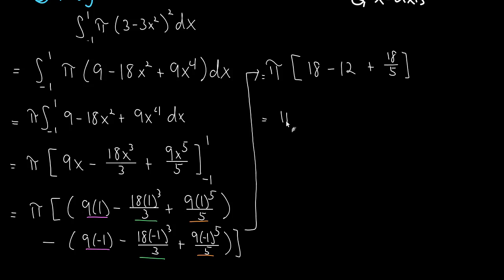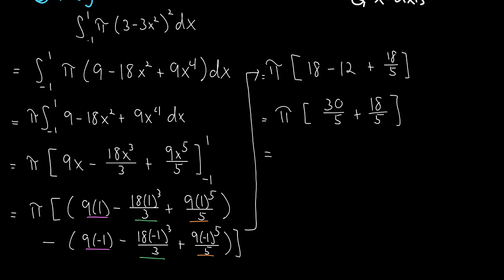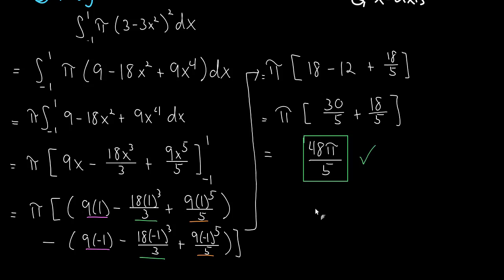We're at the finish line. This gives us 18 minus 12, which is 6. Putting that over 5 gives 30 over 5, plus 18 over 5, which equals 48 over 5. So our final answer is 48 pi over 5. It took a while to get there, but we got through all the steps. That is the volume we were looking for. In upcoming videos we'll do an example rotating around the y-axis, then move on to the washer method and shell method.